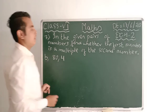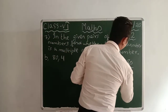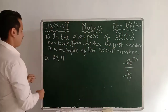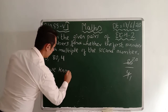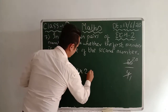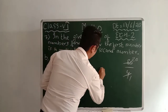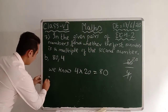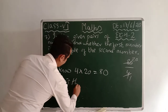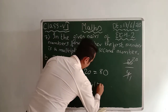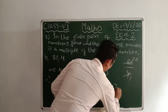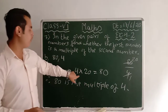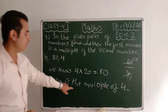Question b: 80 and 4. Is 80 a multiple of 4? Yes, because 80 divided by 4 gives 20. We write: we know 4 × 20 = 80, therefore 80 is the multiple of 4. This concluding statement is compulsory.